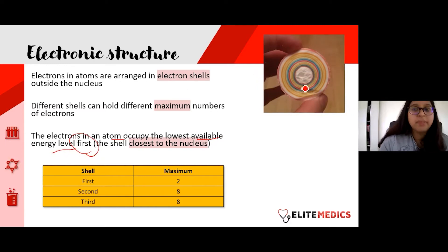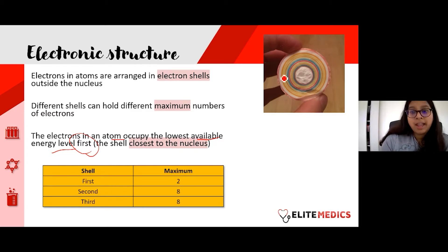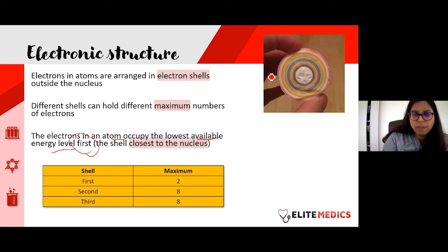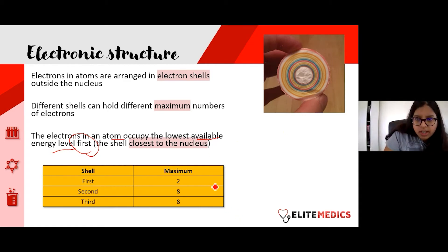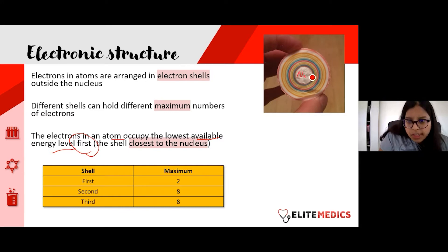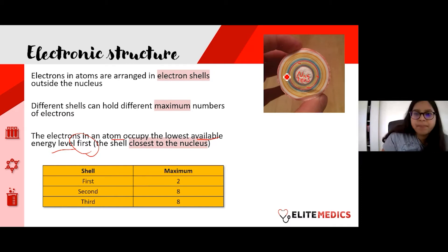I have a picture of a gobstopper — a jawbreaker — to help visualise what atoms look like. If you've eaten one before, there's a bubble gum in the center with layers of sugar around it, like shells of candy. You can think of the middle as the nucleus and each shell containing your electrons floating about.